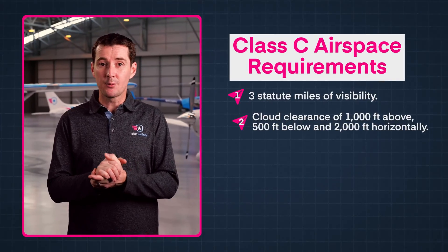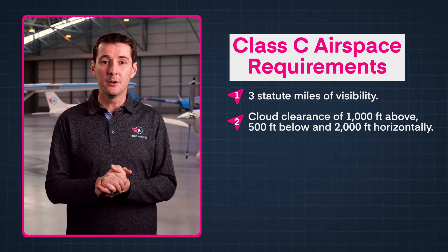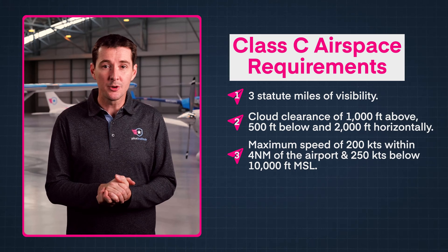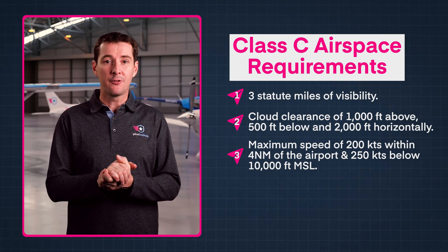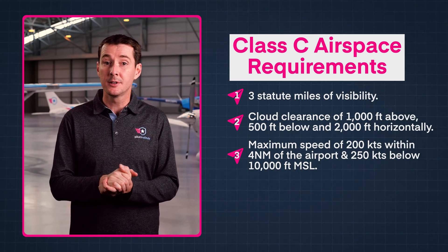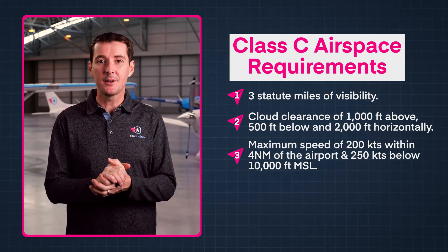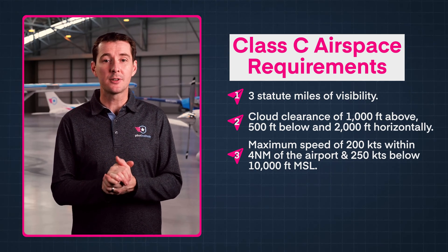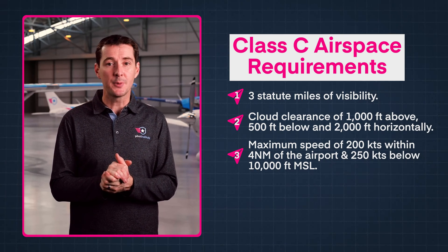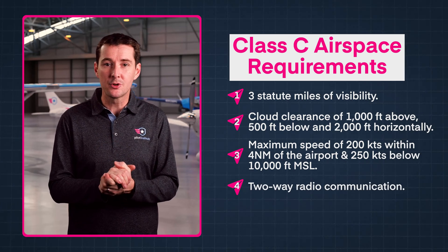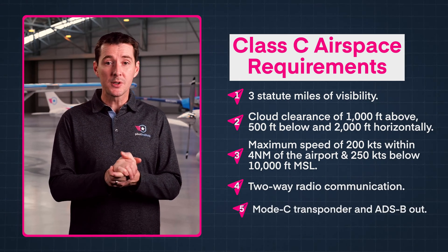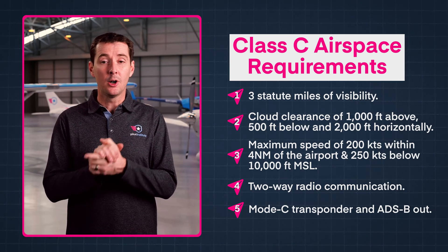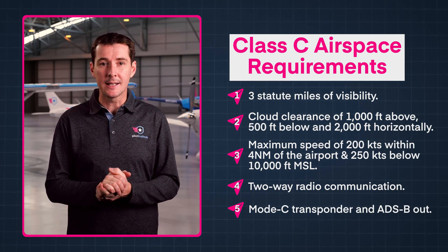You need to fly at least 1,000 feet above, 500 feet below, and 2,000 feet horizontally from the clouds. The speed limit is 200 knots within a 4 nautical mile radius of the airport; otherwise, below 10,000 feet MSL, the standard limit is 250 knots. You don't need ATC clearance to enter Class C airspace, but you must establish two-way radio communication. You also need a Mode C transponder and ADS-B out to fly in or over Class C.